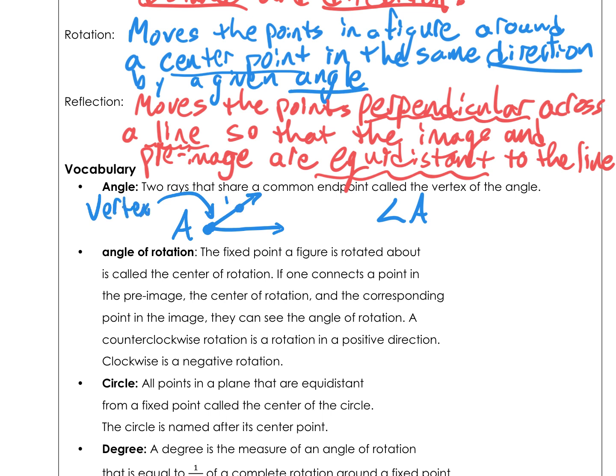Or if we have some other points on it, like B and C, we could call this angle BAC or angle CAB. We name it the way we would draw it — so if we start at B, go to A, and then go to C, we would trace the angle.